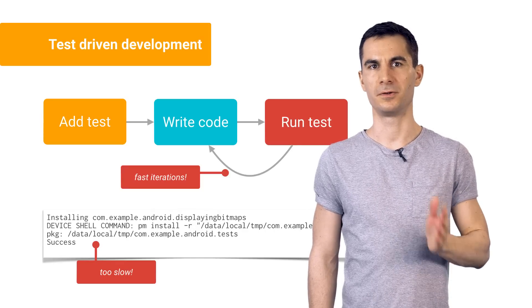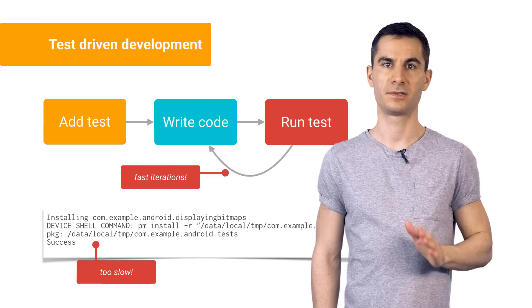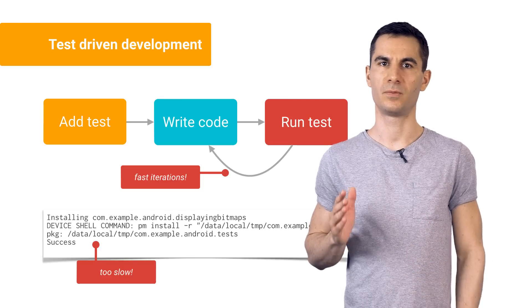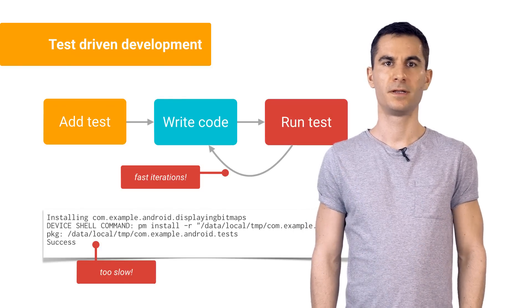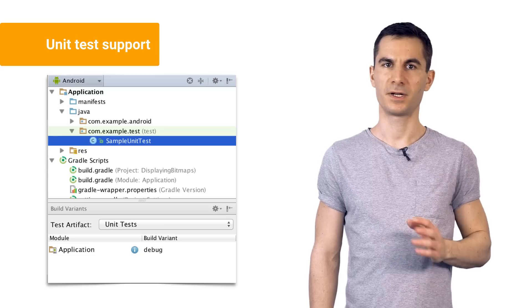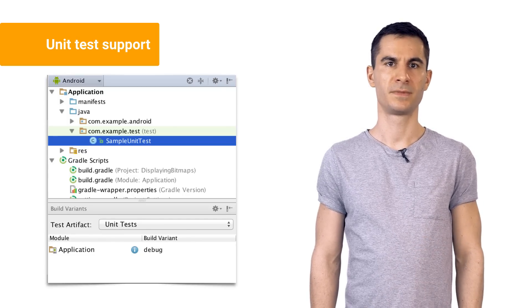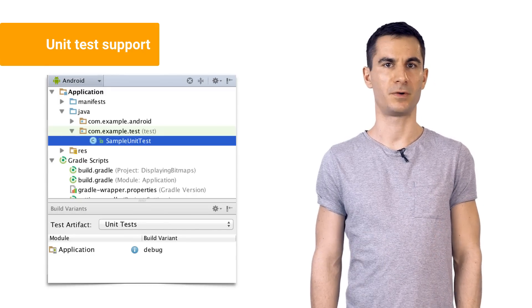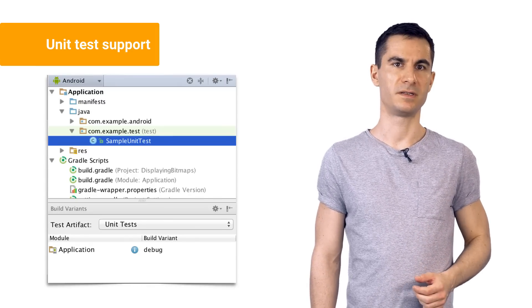Whether you're doing test-driven development or just want to test your code quickly, one of the main pain points was having to deploy tests to the device, and we all know that takes time. Starting from Android Studio 1.1, there is support for running unit tests on your development machine using the local JVM. To use this feature, first put your JUnit tests in the test folder on your Android module. Gradle will create a special version of the Android jar in the class path when you run the test task. Be aware that this jar doesn't actually contain working code, so you can't use any framework classes. You should use one of the popular mocking libraries, like Mockito, to mock the Android dependencies that you need.